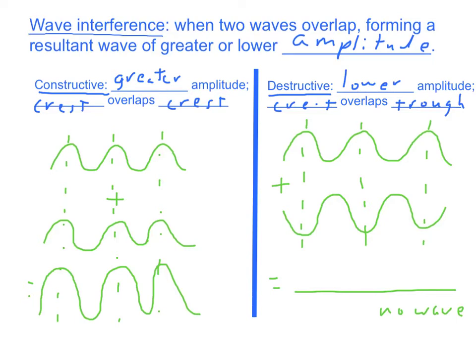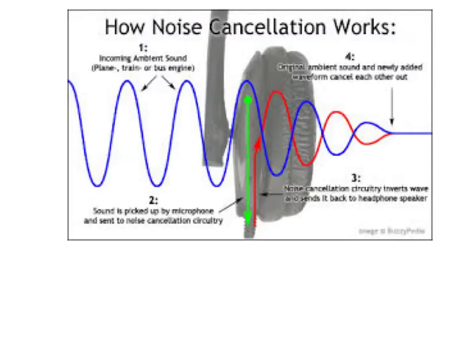Let's take a look at how this can be applied to noise cancelling headphones. Here we see a diagram explaining how noise cancellation works. You have this blue incoming ambient sound. So it could be the sound from a plane or trains or a bus engine or anything loud.